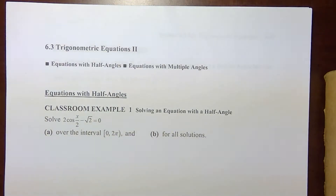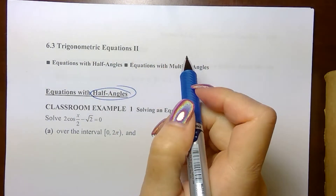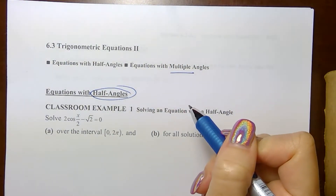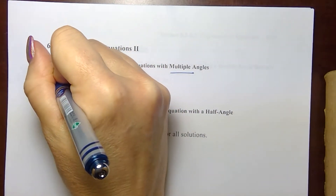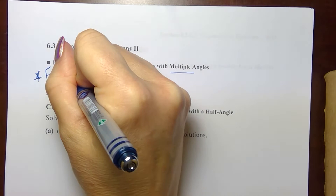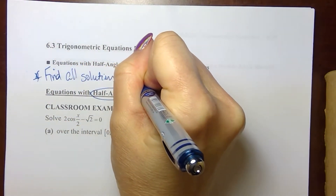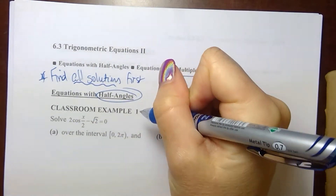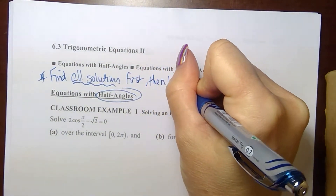In section 6-3 we're still solving trig equations. This time we're going to be focusing on half angle identities — half angles and double angle, multiple angle identities. Remember that the method I prefer is to find all solutions first, whether that's what's asked first or not, and then look back at the given interval.